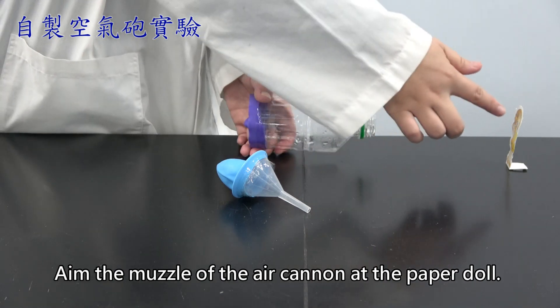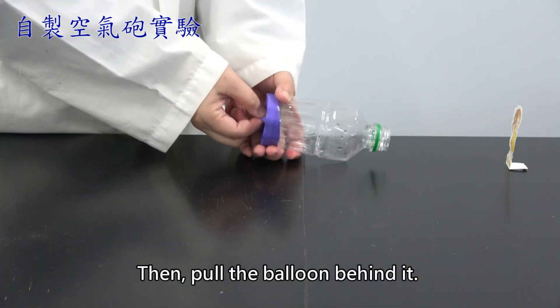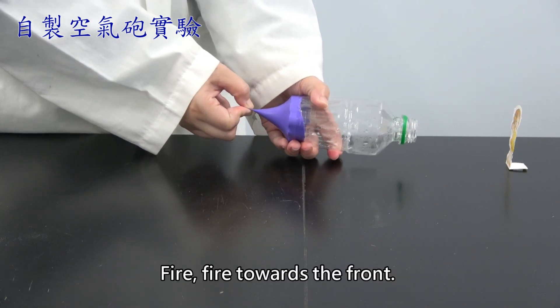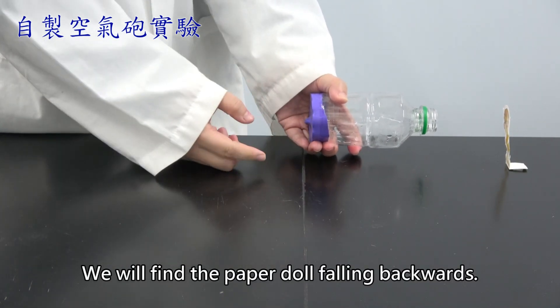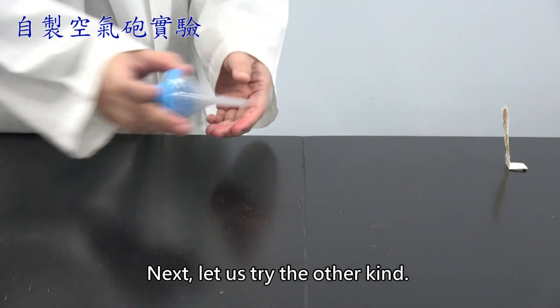Once done, aim the muzzle of the air cannon at the paper doll. Then, pull the balloon behind it. Fire! Fire towards the front. We will find the paper doll falling backwards. Next, let us try the other kind.